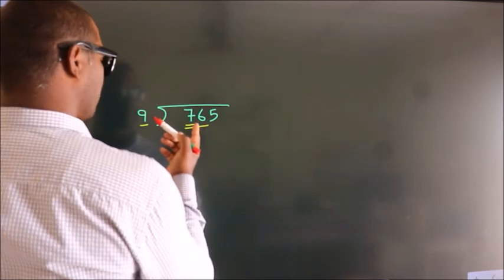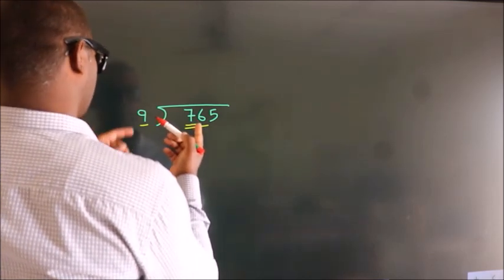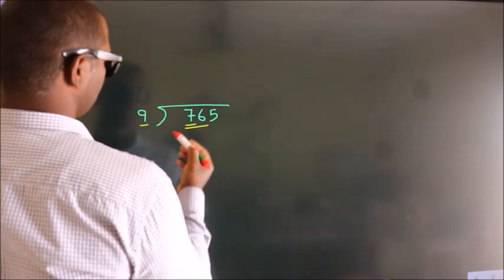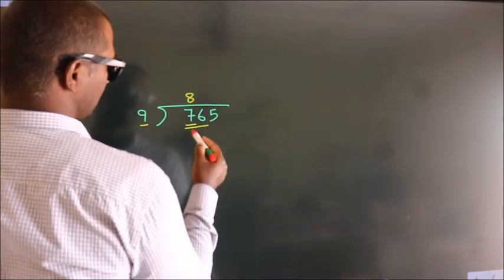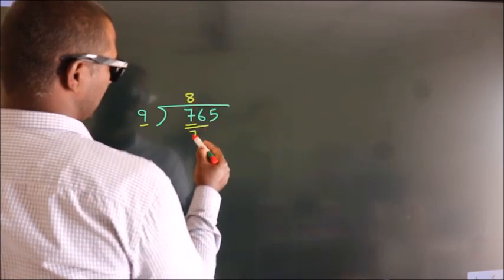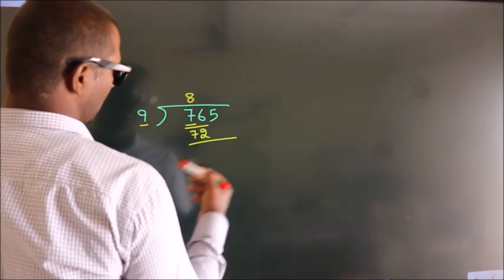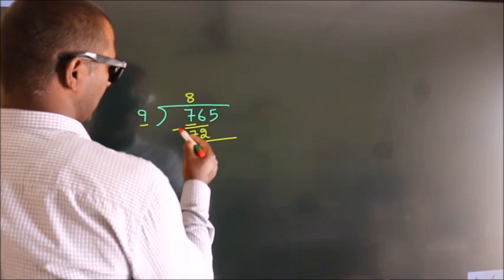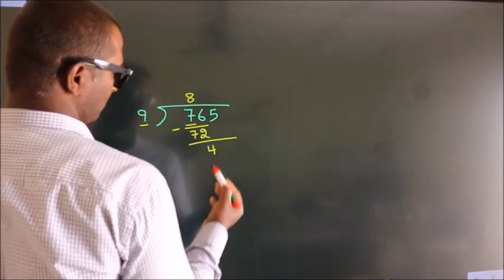A number close to 76 in the 9 times table is 9 times 8, which is 72. Now we subtract and we get 4.